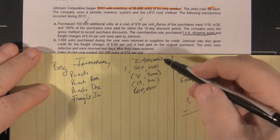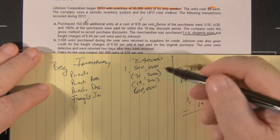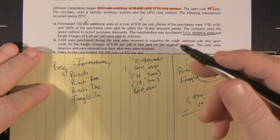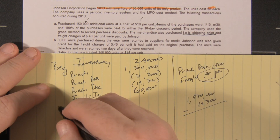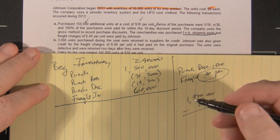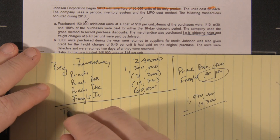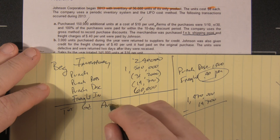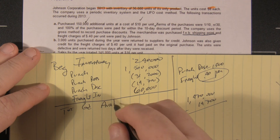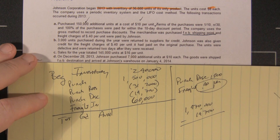So beginning inventory, plus purchases, minus purchase returns, minus discounts, minus allowances if there were any, plus freight-in — that gives us our total goods available. This is just like you did in Accounting One, but now we're doing real numbers.